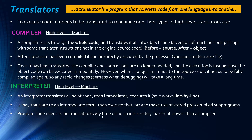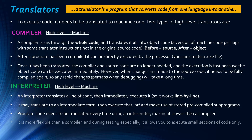Program code needs to be translated every time you use an interpreter — whenever you want to execute the code, you have to translate it again. So overall it's going to be slower than a compiler, and executing interpreter code is also actually slower. But it is more flexible, especially during testing and development. You can execute small sections of code without compiling the whole program, which makes it much more flexible for rapid changes.